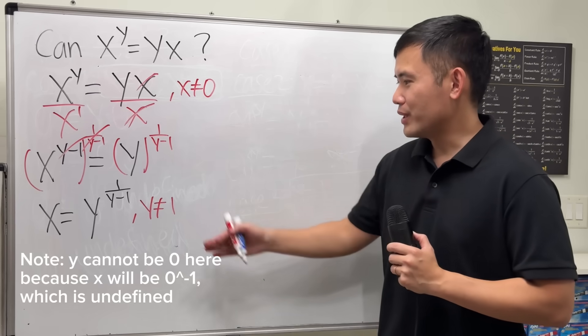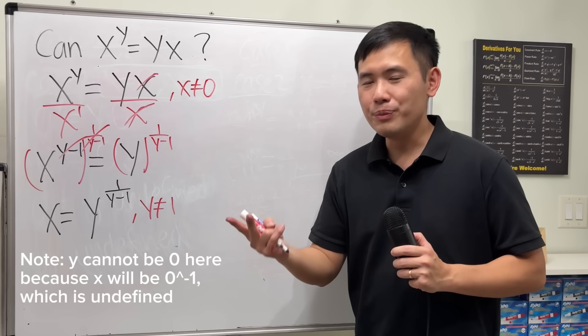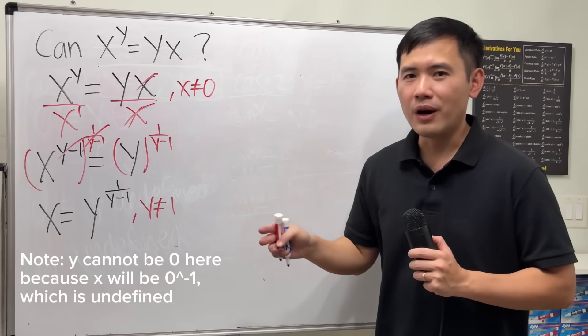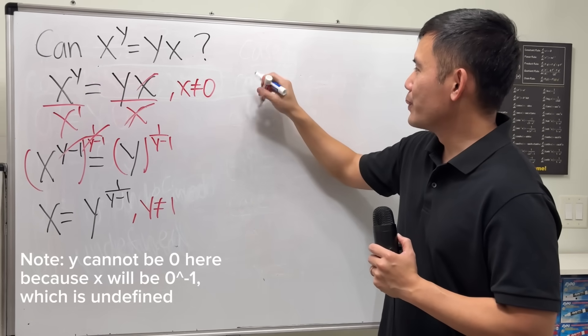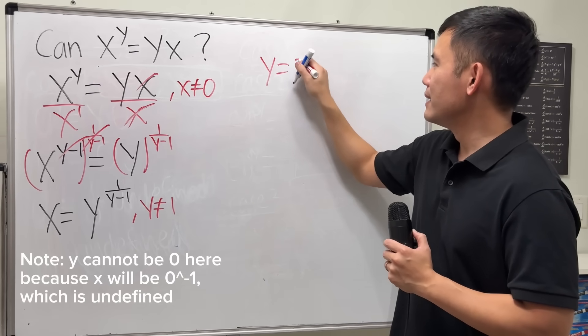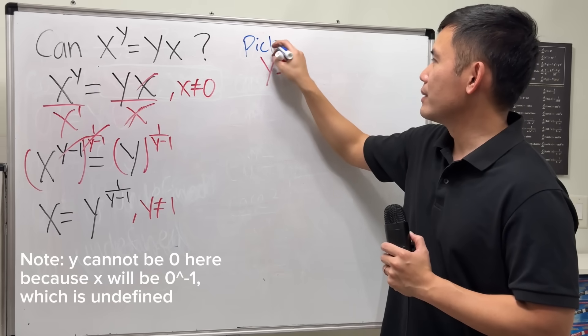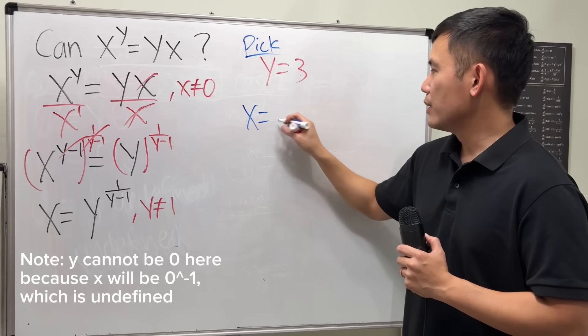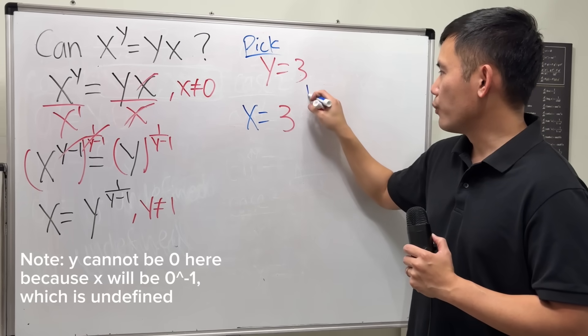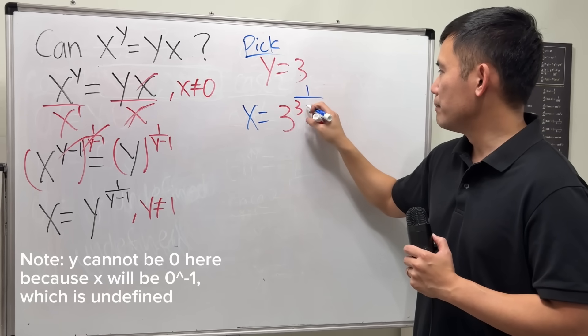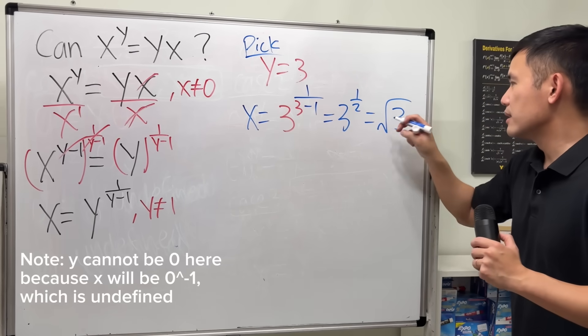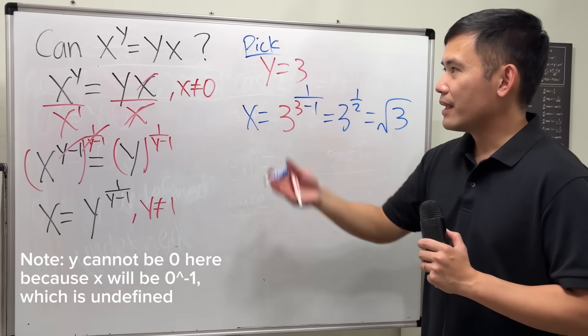I'm just going to pick—we cannot pick 1. Don't pick 2 because 2 to the 2 is equal to 2 to the 2. So let's pick not 4. That's too hard. Just pick 3. Start with y equals 3. So this is just an example. And worked out the x. x will be 3 raised to the power of 1 over 3 minus 1, which is the same as 3 to the 1 half, and feel free to write it as square root of 3.